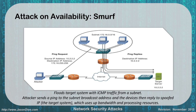A Smurf attack uses ICMP traffic. The attacker sends a ping to a subnet but spoofs the source address to be the victim server's address. When the subnet responds to the broadcast ping, all replies flood back to the victim server, overwhelming it with ping replies.